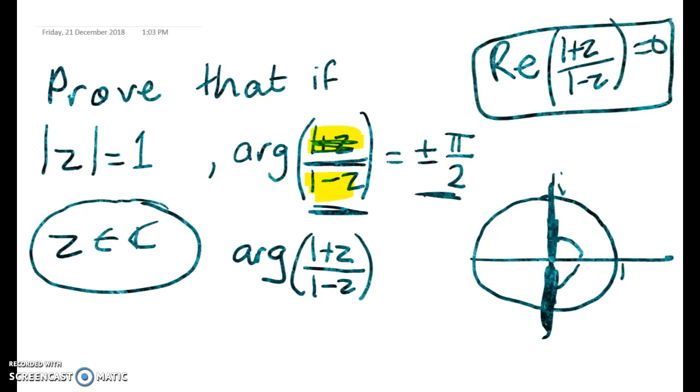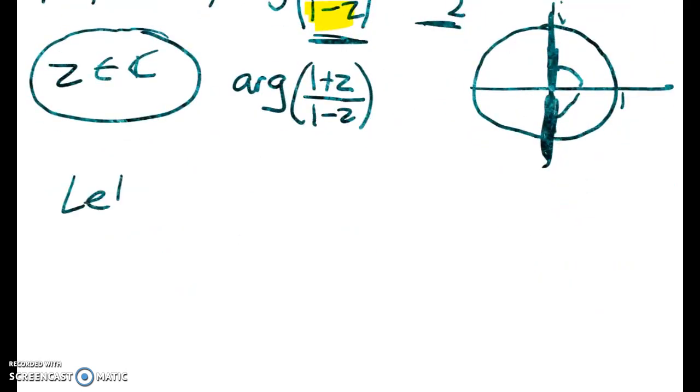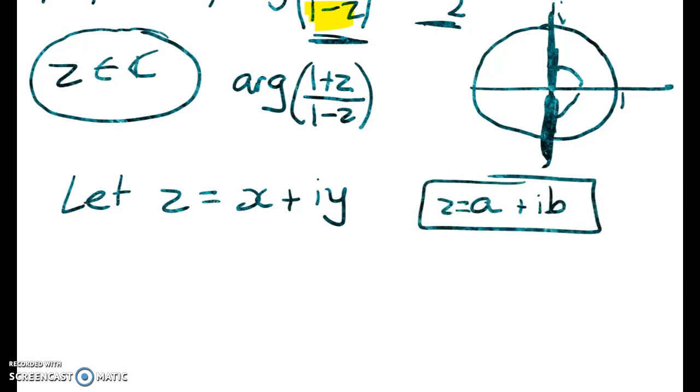Right, so let's start off as we usually do by defining z. So let z equal x + iy, or you could use a + ib, or whatever you want to use. It doesn't matter. I always use x and y when I'm doing locus problems, but you don't have to.